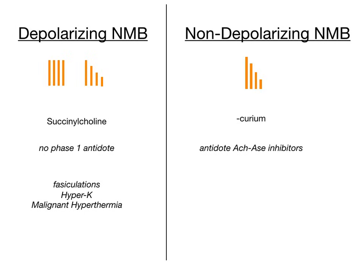Depolarizing has no antidote for phase one — the constant but diminished activity at the receptor — there's no antidote to reverse that. But if someone overdoses on a non-depolarizing neuromuscular blocker, you give them an acetylcholinesterase inhibitor, and that is the antidote. You're blocking acetylcholine activity, so if you give an acetylcholinesterase inhibitor, you're inhibiting the thing that usually breaks down acetylcholine. Acetylcholine is disinhibited, and therefore total levels of acetylcholine are increased. That is why acetylcholinesterase inhibitors are the antidote for non-depolarizing neuromuscular blockers.